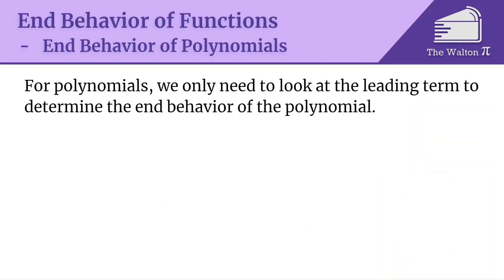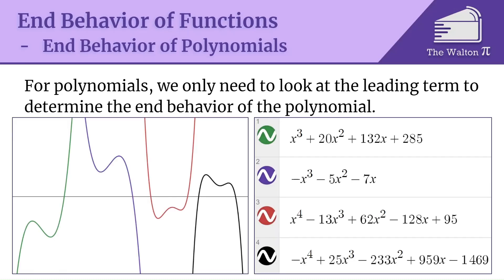For polynomials, we just look at the leading term — the coefficient of the highest-degree x power — to figure out end behavior. For example, x³ + 20x² + 132x + 285 is an odd-degree polynomial. From the graph, as x → −∞ it heads down and as x → +∞ it heads up. So the limit as x → ∞ is infinity, and the limit as x → −∞ is negative infinity.